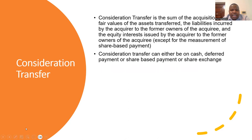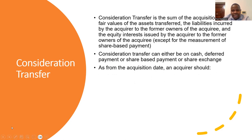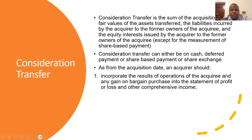Consideration transferred can be in cash, deferred payment, share-based payment, or share exchange. We are going to look at examples to explain this. As from the acquisition date, an acquirer should incorporate the results of the operations of the acquiree and any gain on a bargain purchase into the statement of profit or loss and other comprehensive income — this starts from the date when the acquirer has control over the acquiree.